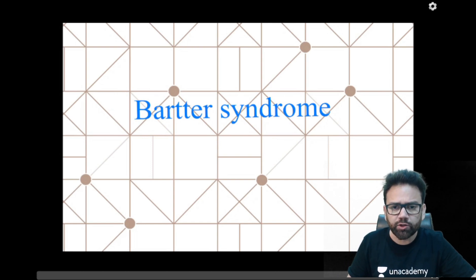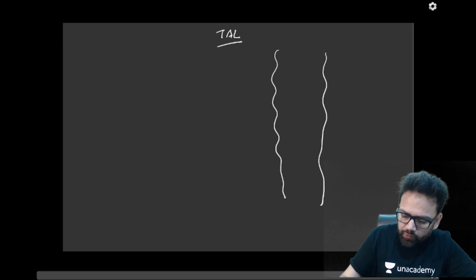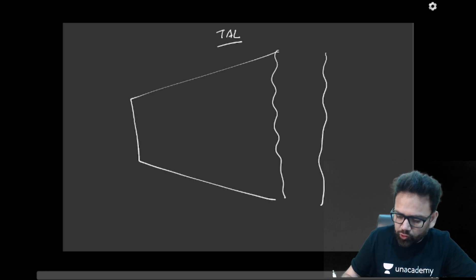And to understand Bartter syndrome, we should know the basic physiology of thick ascending loop of Henle. So if we make a diagram of thick ascending loop of Henle, we can see that there are various pumps and channels which we should know for better understanding of Bartter syndrome.